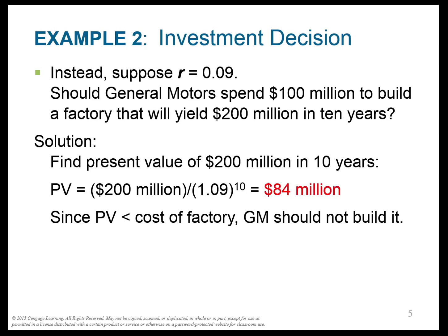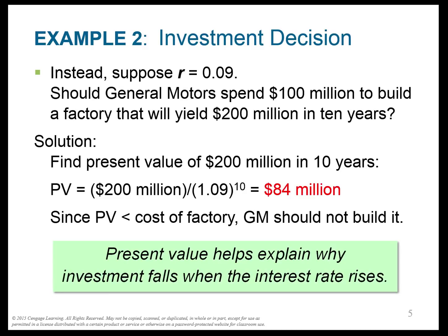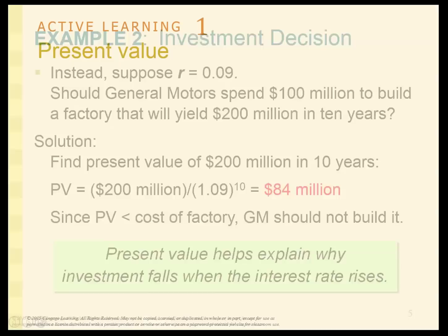This helps us understand why investment falls when interest rates rise. On the market for loanable funds, the demand curve slopes downward. As the interest rate goes up, we see a decrease in the quantity of funds demanded — just like General Motors, who decided not to invest when the rate rose to 9%.